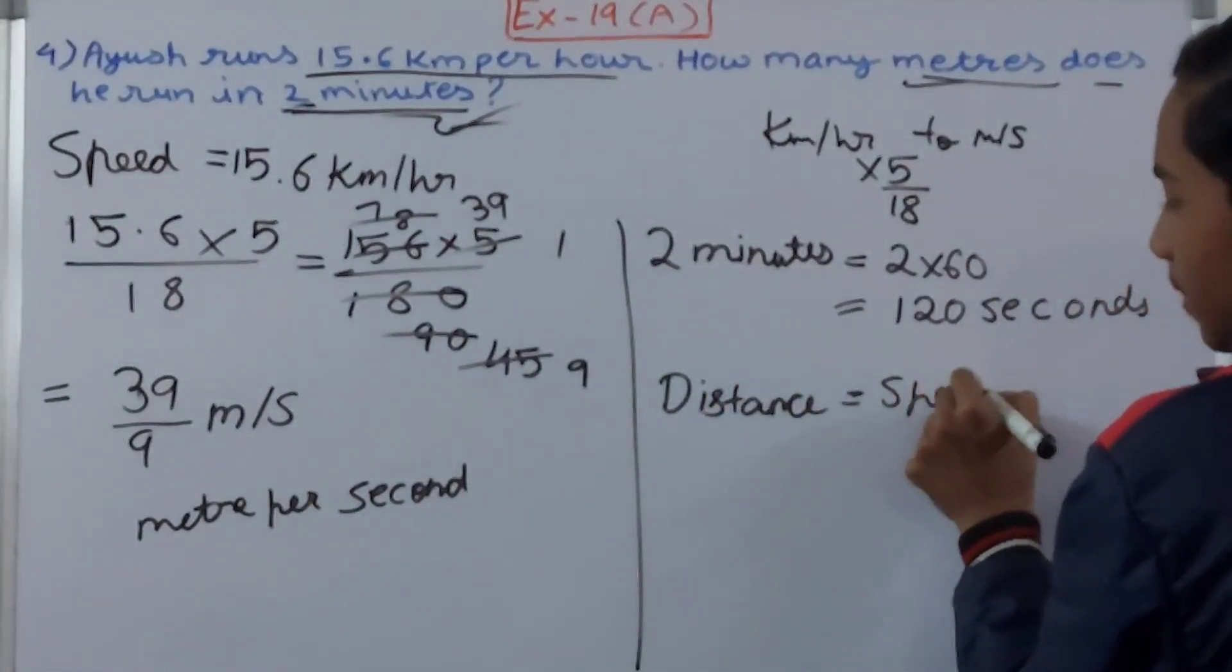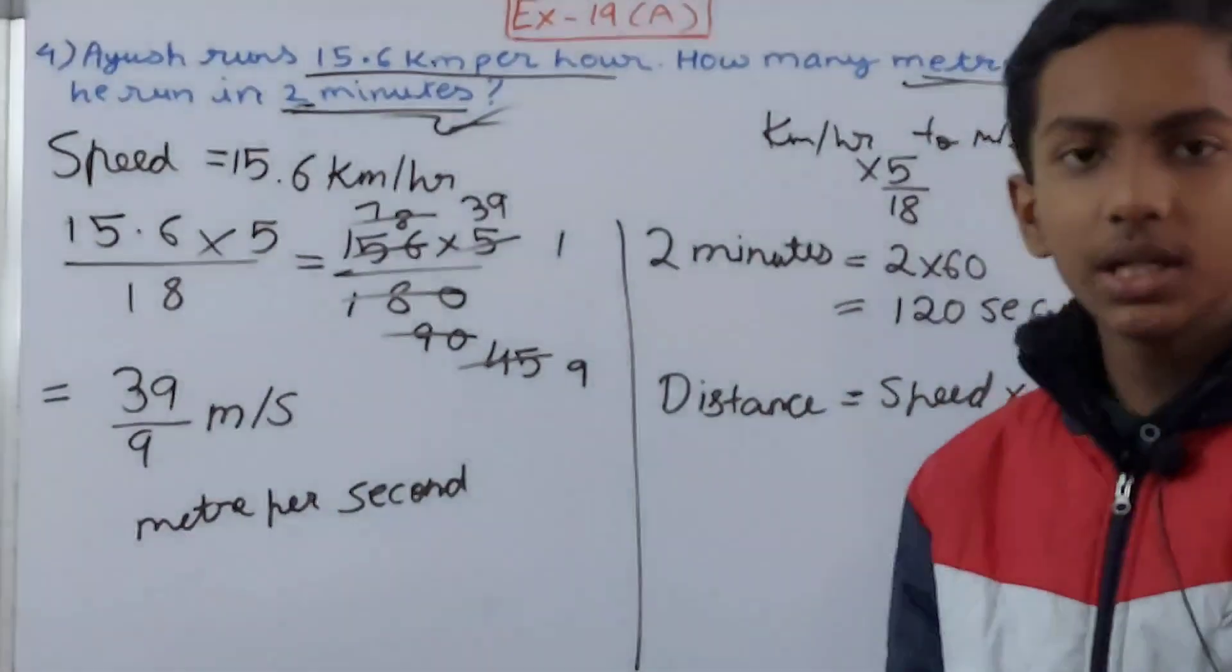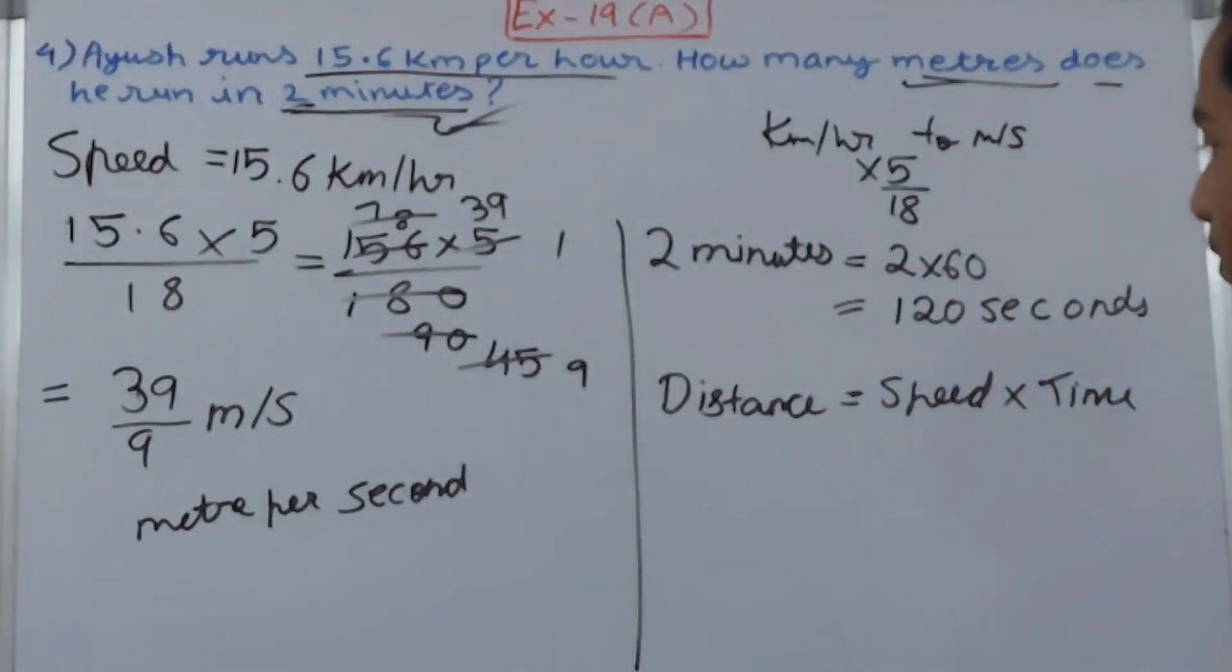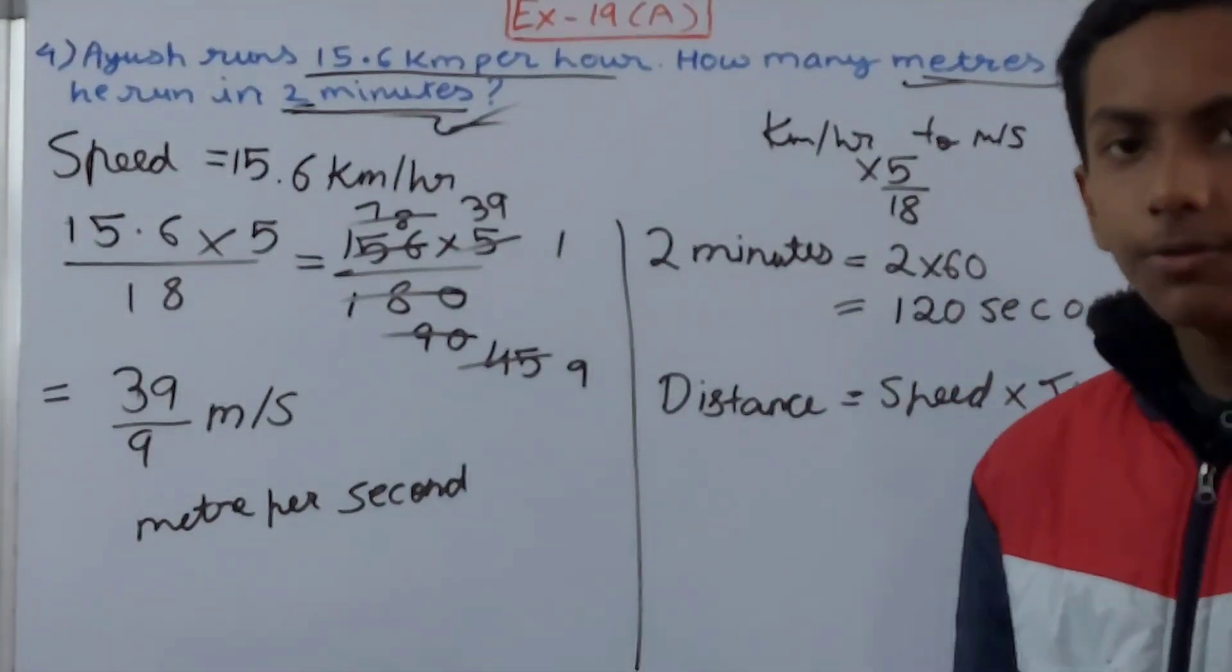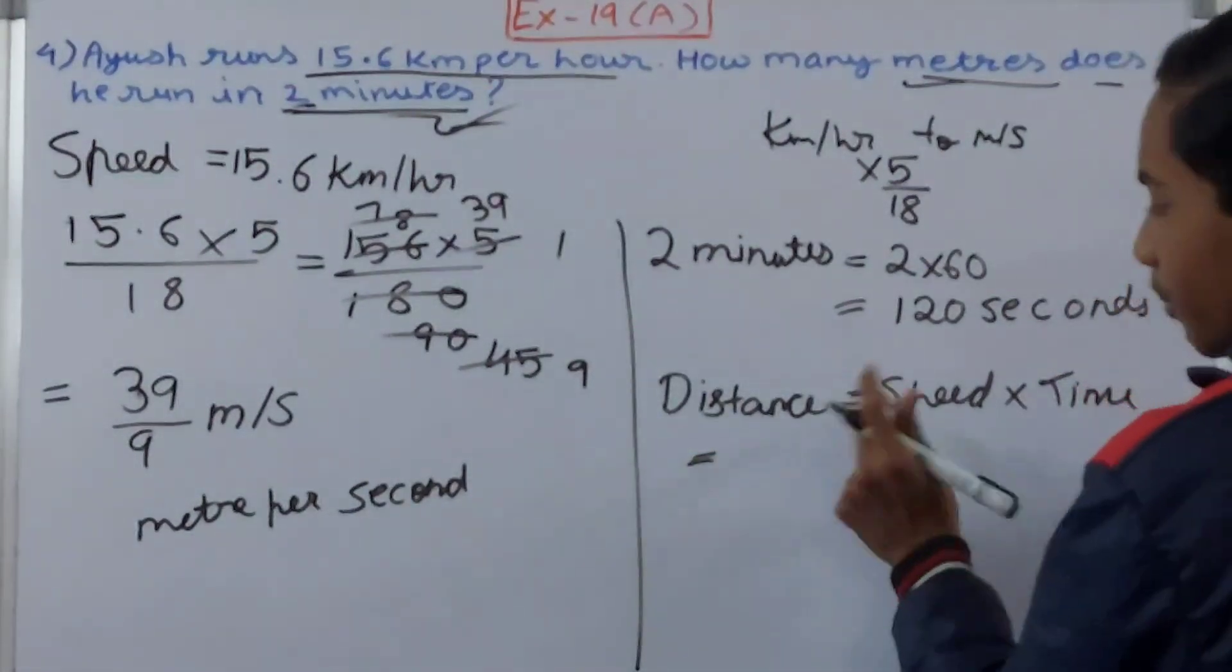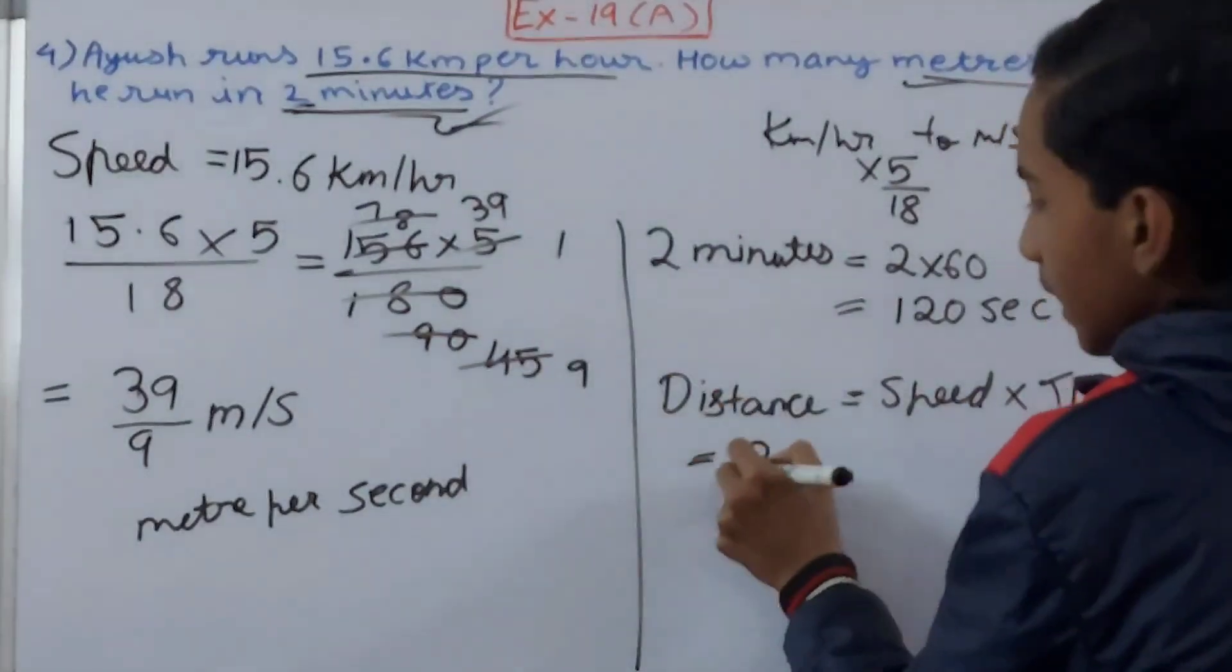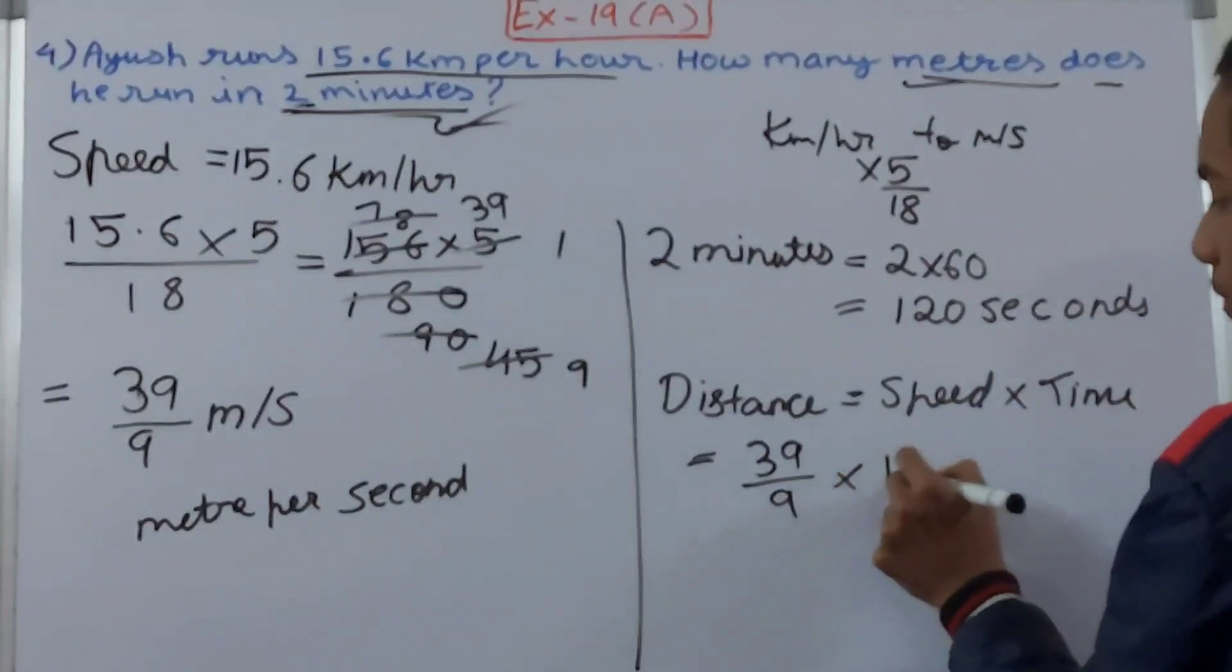Speed into time. We've done it in the previous question as well. You need to memorize all of the formulas. Then only it will be very easy for you to solve the questions. Or simply you can just memorize one formula—speed equals distance upon time. So now we put the values in: speed is 39 by 9, time is 120 seconds, so into 120.